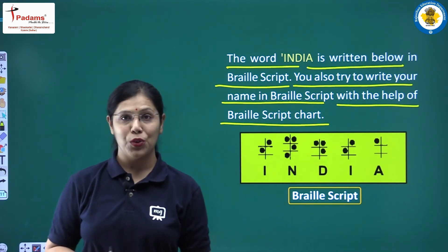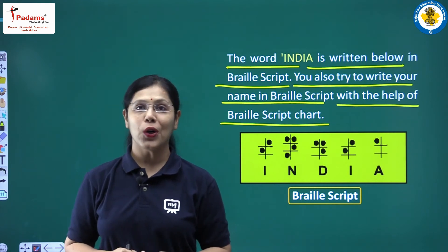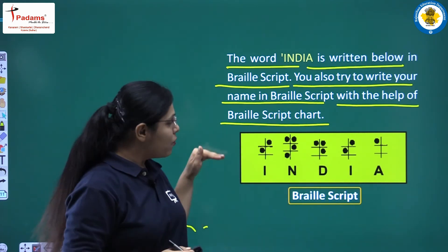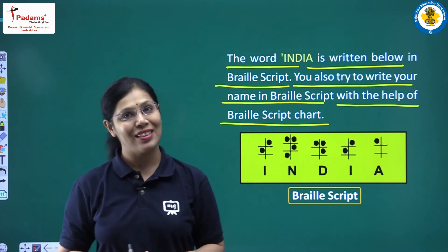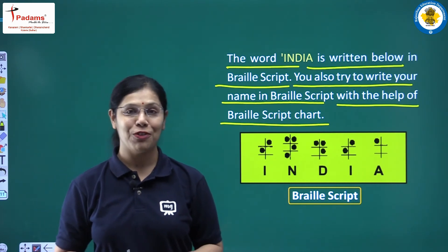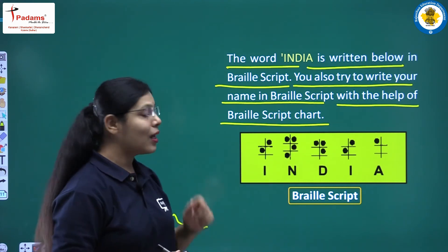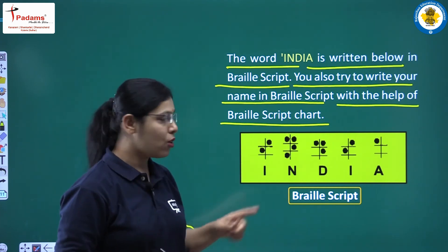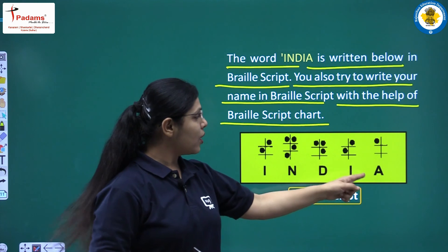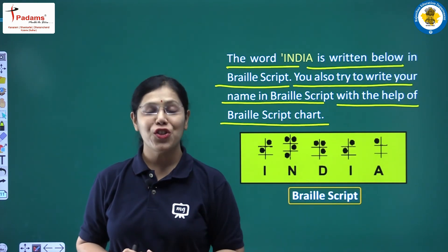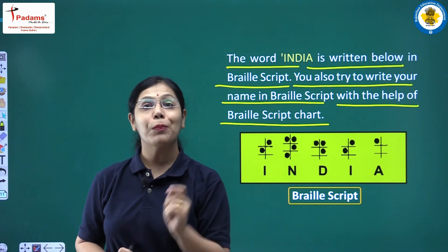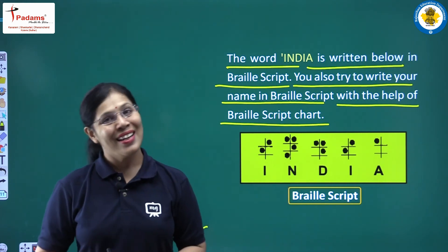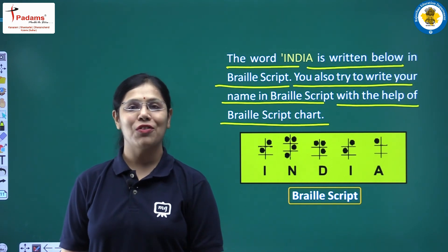You have the Braille script chart which I showed you in the previous part in your book. Look at that Braille script chart and write your name in your notebook in the Braille script manner using that chart. Dear students, that was all for today. Thank you for watching and we will meet in the next part.